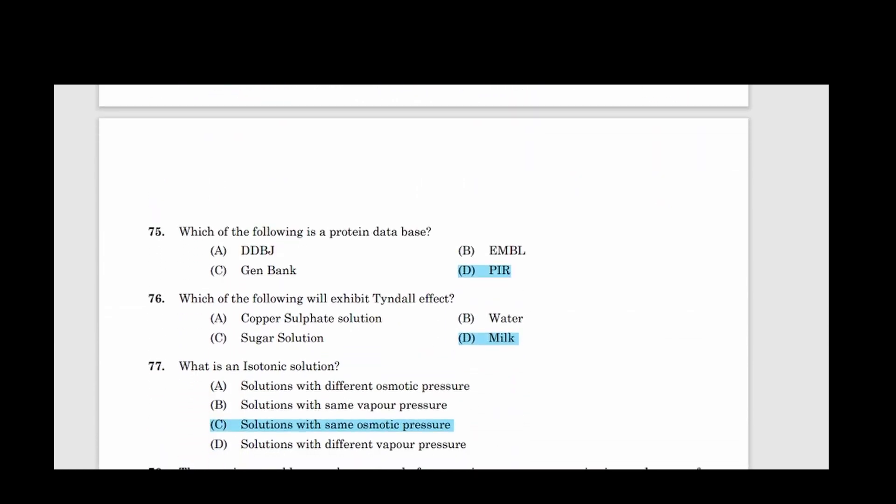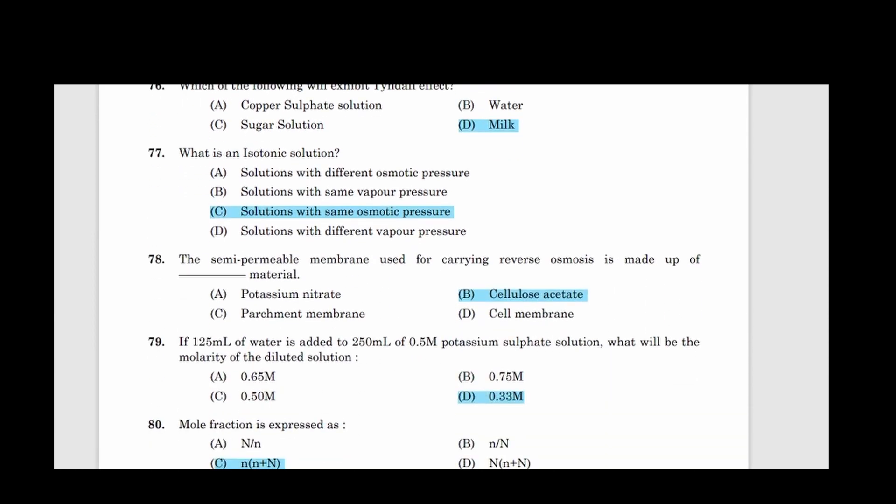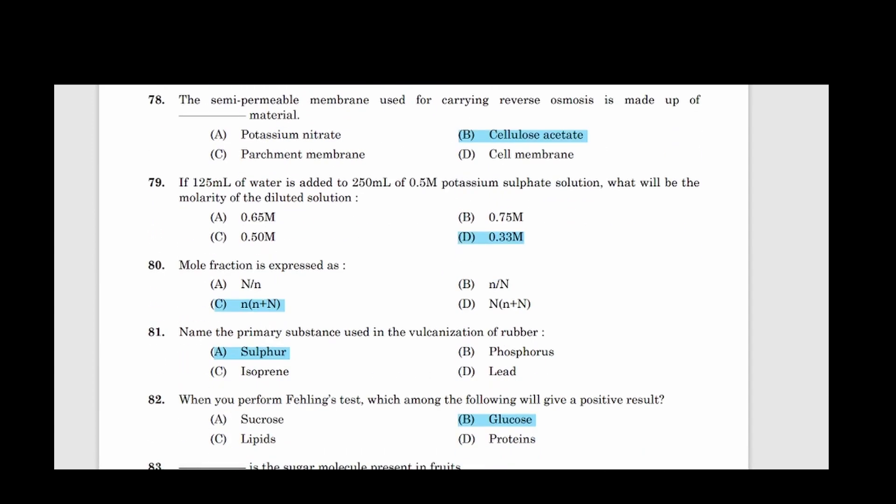75: Which of the following is a protein database? Answer option D, PIR. 76: Which of the following will exhibit Tyndall effect? Answer option D, Milk. 77: Which is an isotonic solution? Answer option C, Solutions with same osmotic pressure. 78: The semi-permeable membrane used for carrying reverse osmosis is made up of dash material. Answer option B, Cellulose acetate. 79: In 125 ml of water is added to 250 ml of 0.5 molar potassium sulfate solution. What will be the molarity of the diluted solution? Answer option D, 0.33 M.